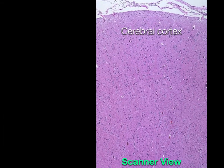The cerebrum is divided into two layers: the superficial cortex and the deeper medulla. The medulla, however, is not seen in this particular slide.